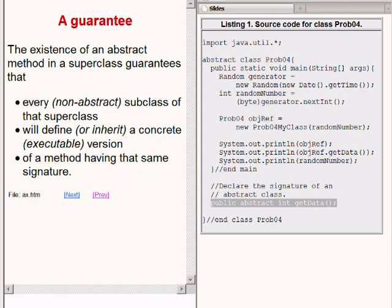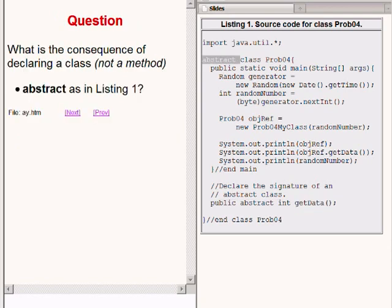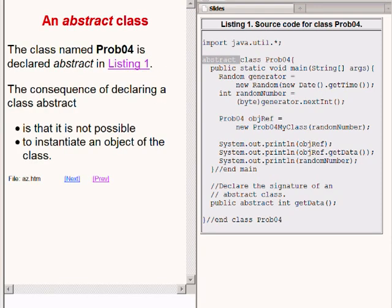The existence of an abstract method in a superclass guarantees that every non-abstract subclass of that superclass will define or inherit a concrete, executable version of a method having that same signature. So here is another question for you. What is the consequence of declaring a class abstract as in the code on the right of your screen? As you can see, the class named prob04 on the right of your screen is declared abstract.